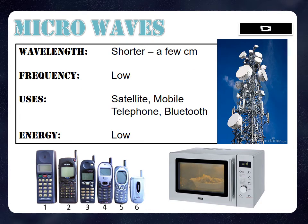Next are microwaves, which are really short — a few centimeters. They have a low frequency and are used for communications as well as microwave heating. Uses include satellite communication, mobile phones, telephones, Bluetooth, and communicating to satellites. Microwaves tend to be used for communications and are also low energy.